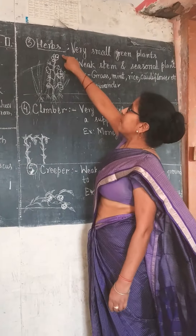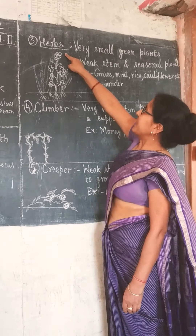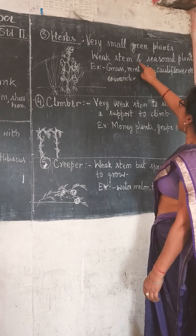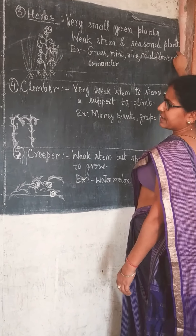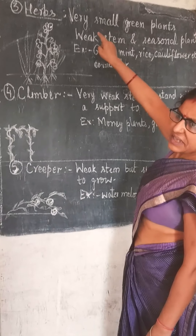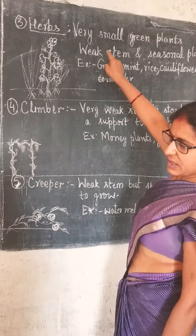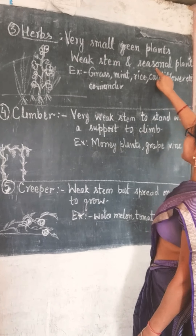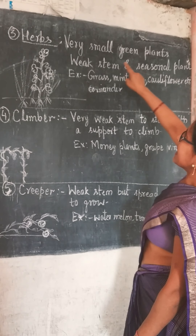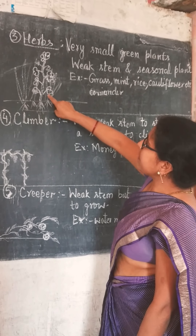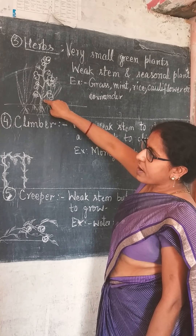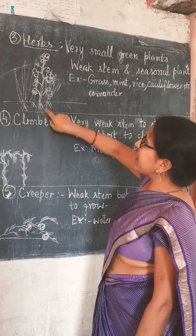Now the next type is Herb. Herb यानि शाकीय पौधे. Very small green plants with weak stems are called herbs. They are seasonal plants - these plants live for 3-4 months in a year, and then their life is complete. They are very weak and small, and they are not able to grow tall.